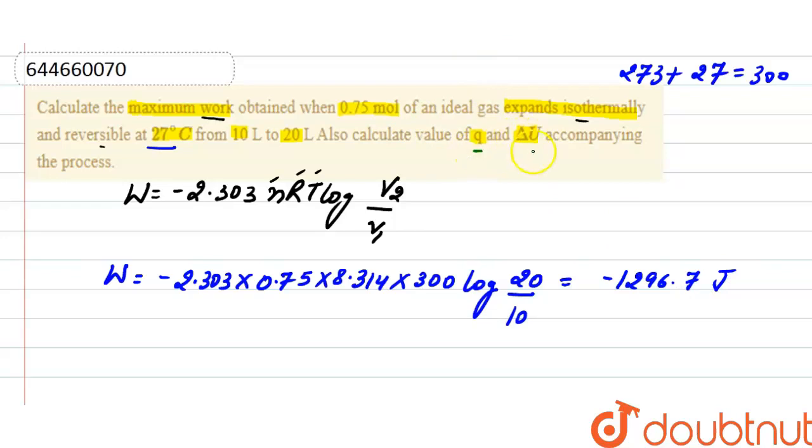As internal energy at constant temperature, that is isothermal condition, equals zero. And according to first law of thermodynamics, internal energy equals Q, that is heat exchange, plus work done.